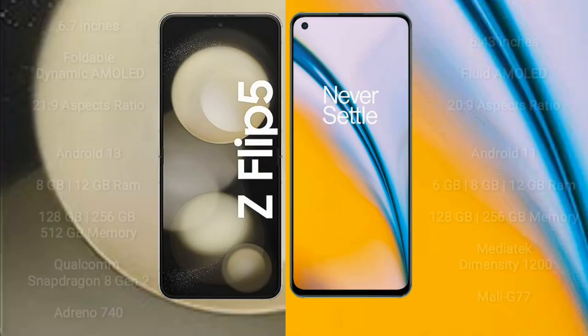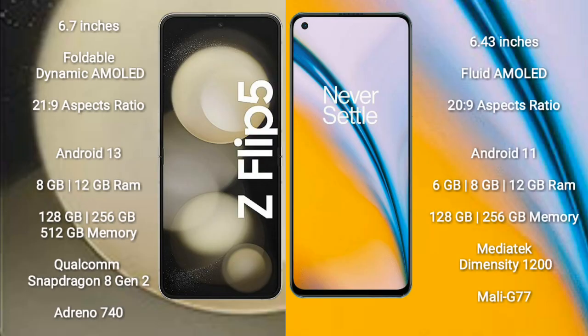Samsung Galaxy Z Flip 5 comes with a 6.7-inch flat AMOLED display and aspect ratio 21:9. OnePlus Nord 2 comes with a 6.43-inch flat AMOLED display and aspect ratio 20:9.